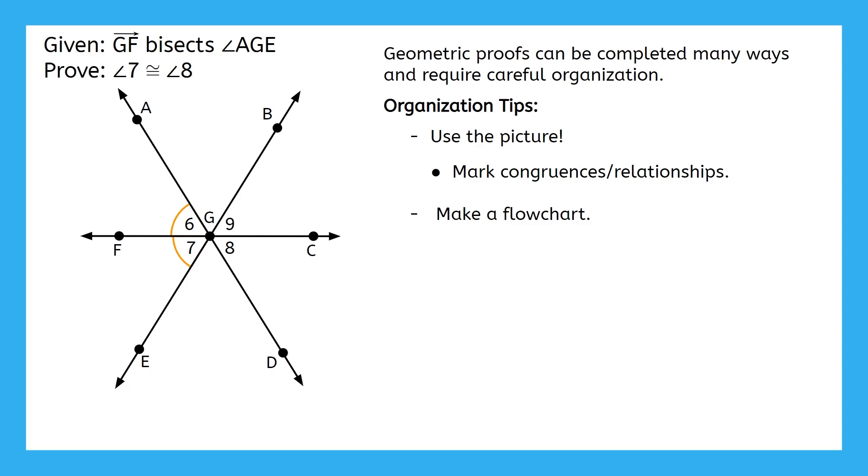Flowcharts are really helpful for geometric proofs because we can easily see the relationships between our statements. This will help us tell what order they need to be stated in and which statements are related. Flowchart proofs have three main features. First, any time we make a statement, we put it inside of a box or a bubble. Then, we write the reason for each statement underneath the bubble. Finally, we connect statements that lead to each other with arrows to show the relationship. Once you've completed your flowchart, it should be much easier to make a two-column proof. Since we've already used our picture, let's move on to the flowchart next.